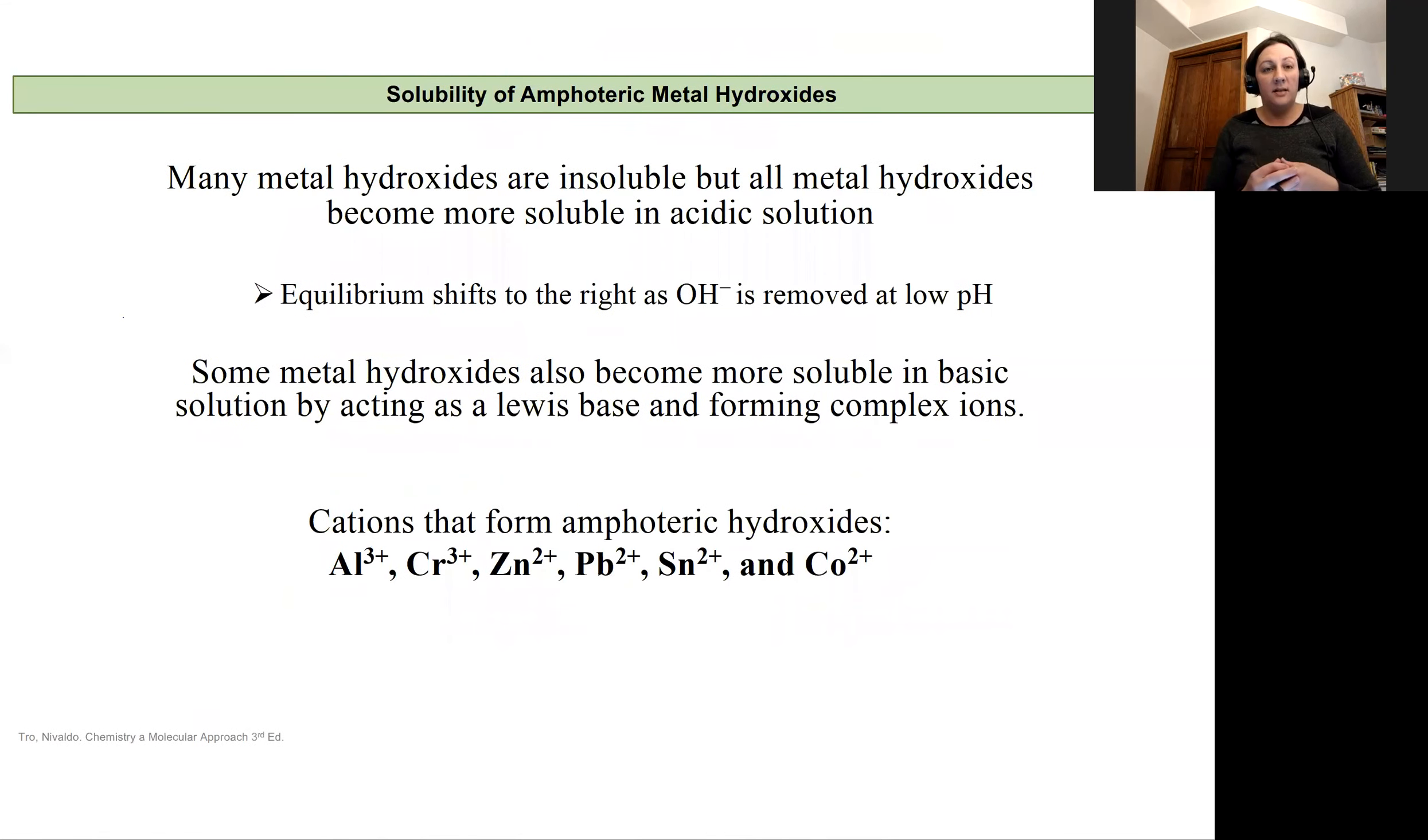We see this also with a lot of amphoteric metal hydroxides. A lot of our metal hydroxides are insoluble, but they can become more soluble if the solution becomes acidic. And a lot of that has to do with equilibrium shifting as the presence of hydroxide ions decreases at the lower pH.